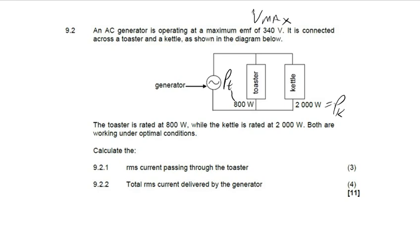Now part B — they say: find the total RMS current delivered by the generator. The generator is connected to both the toaster and the kettle, which are connected in parallel as you can see. These two loads are connected in parallel.